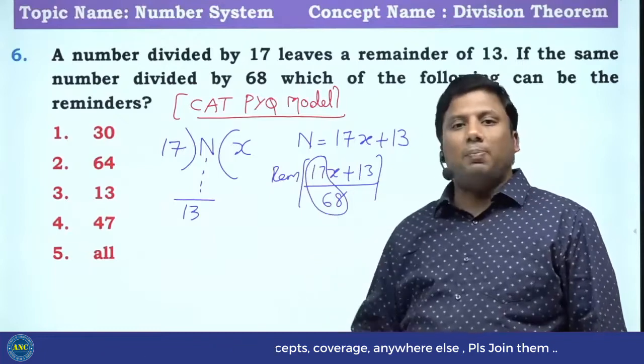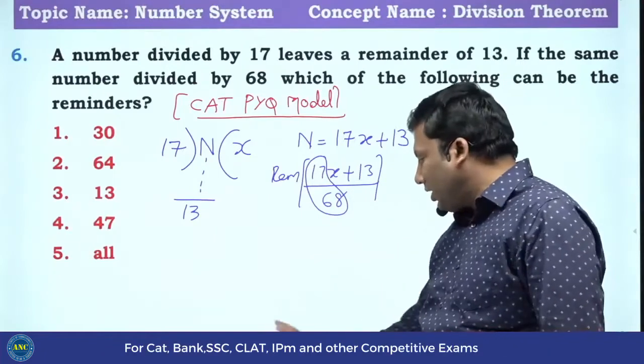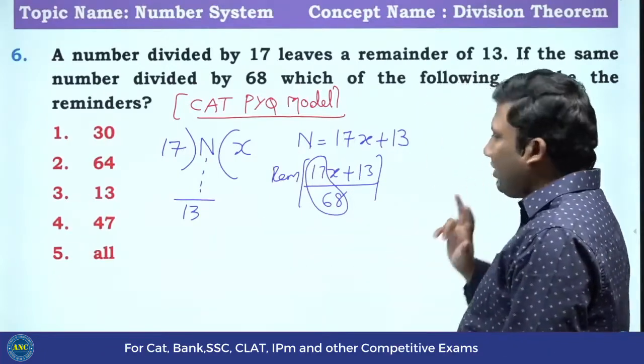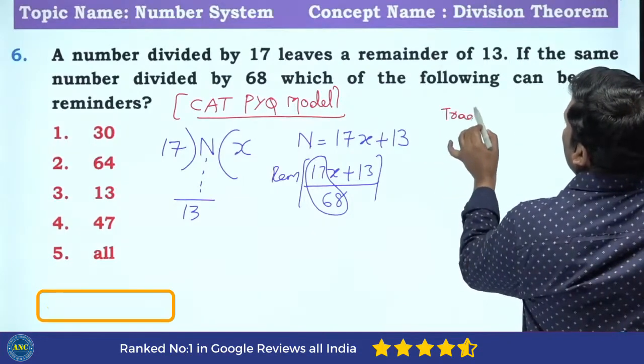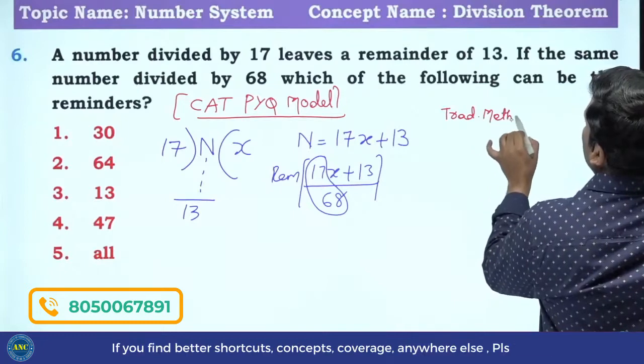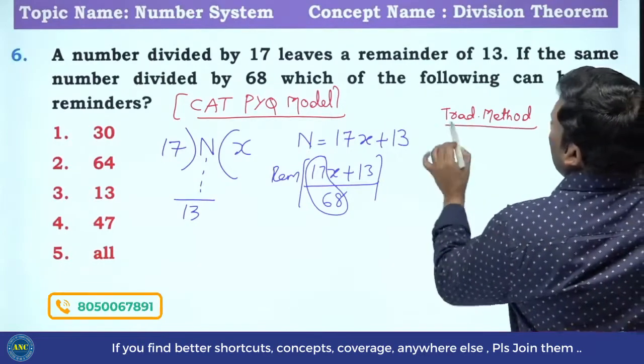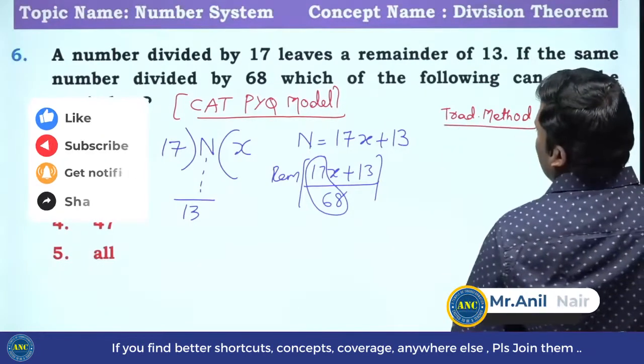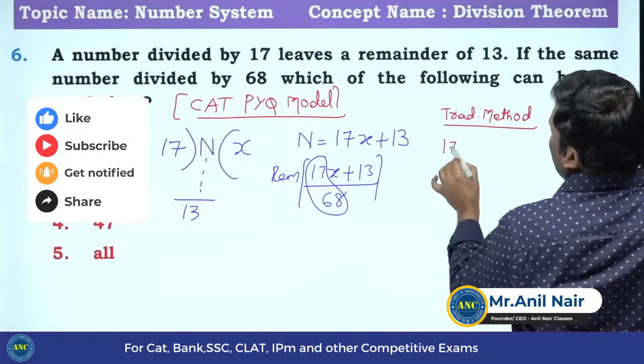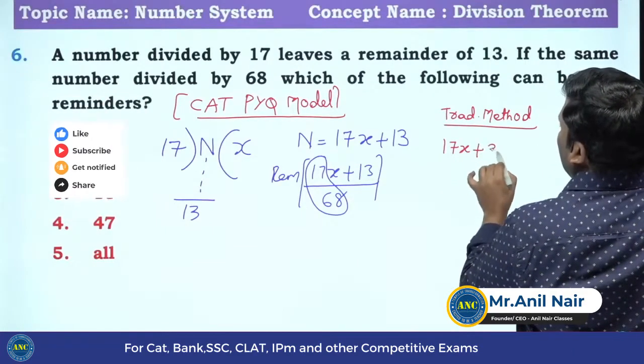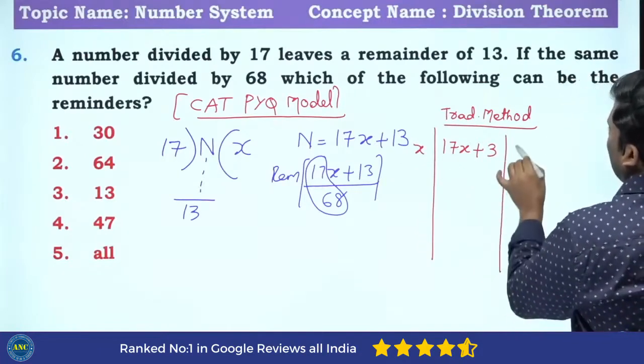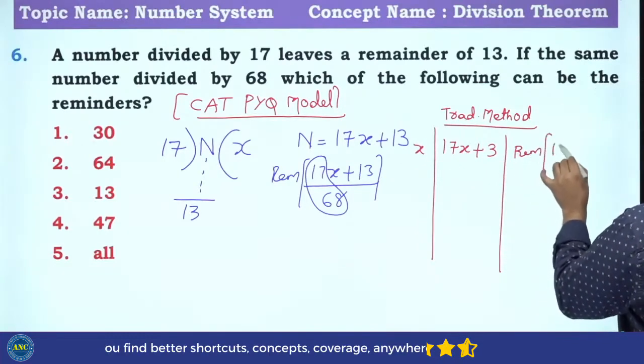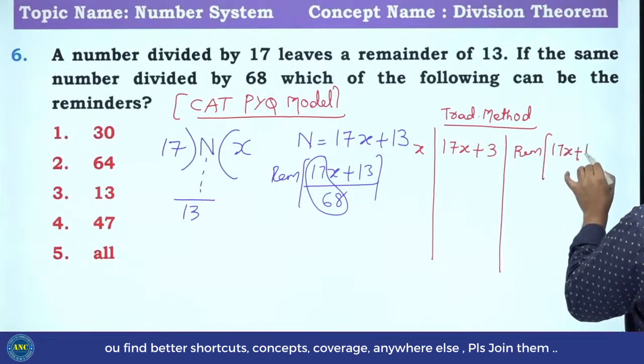Now what we will do is first we will do traditional method. Traditional method, then I will tell you Anil Nair's method. Now see here, this 17X plus 13. This is X, this is remainder.